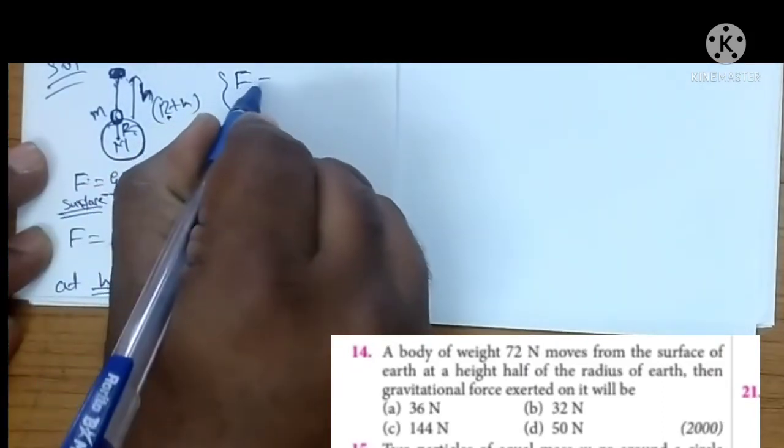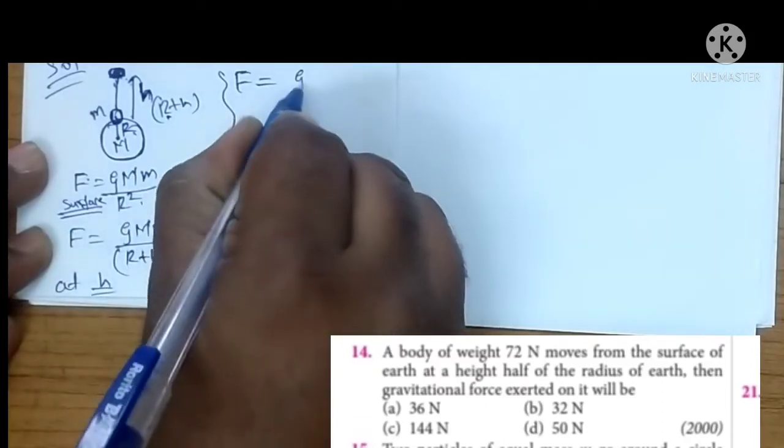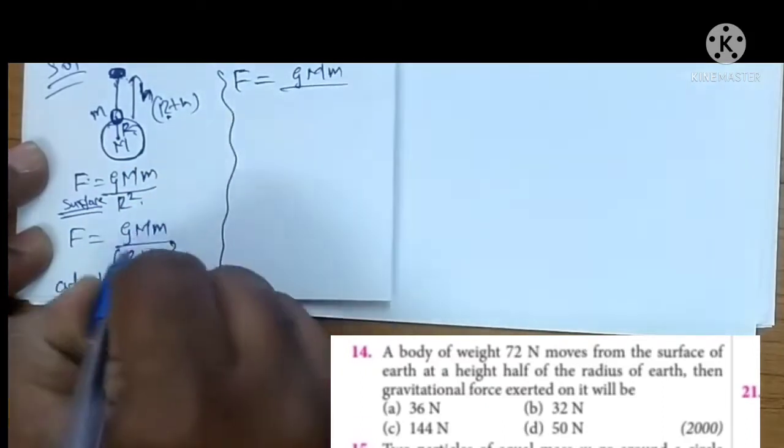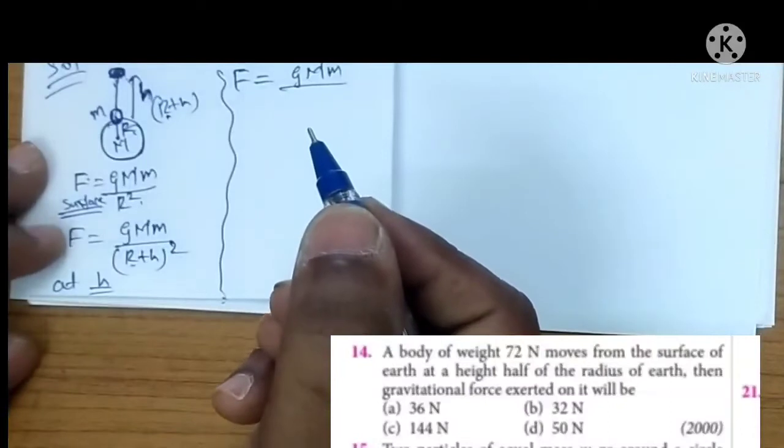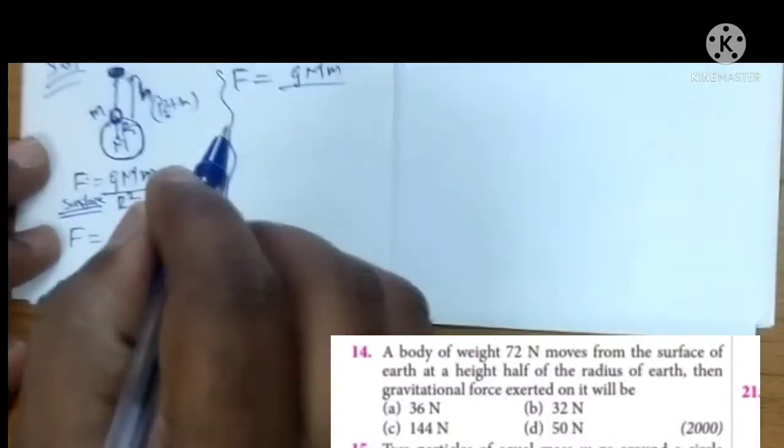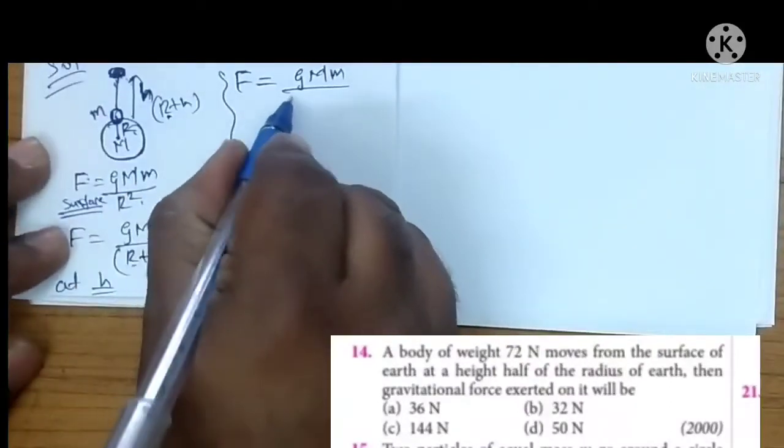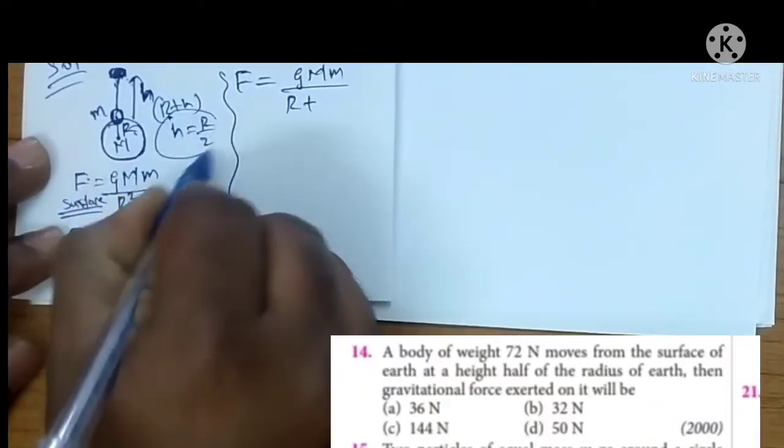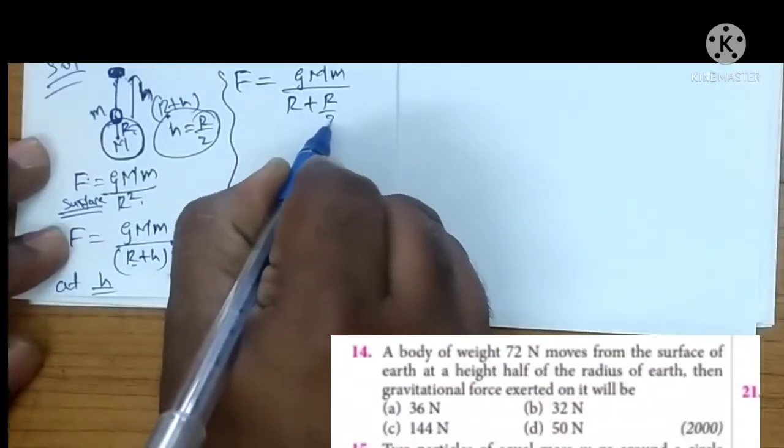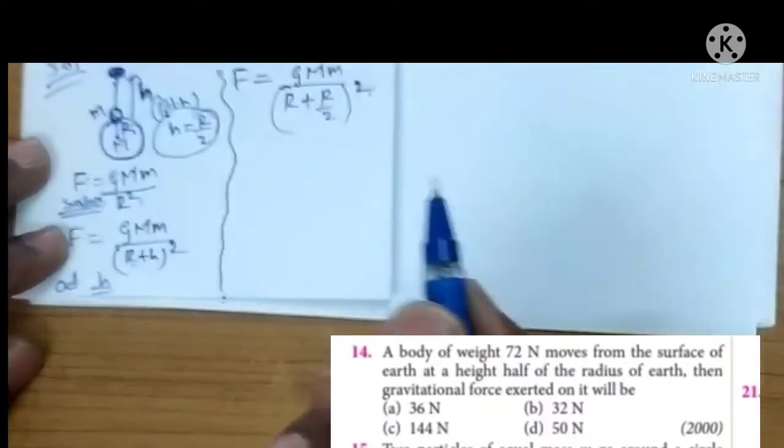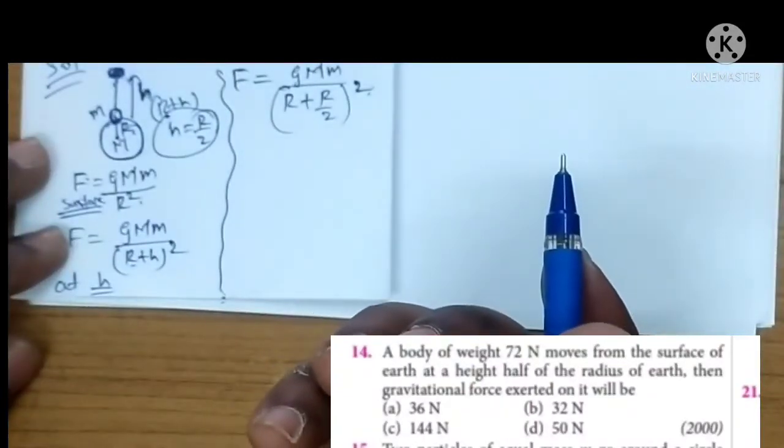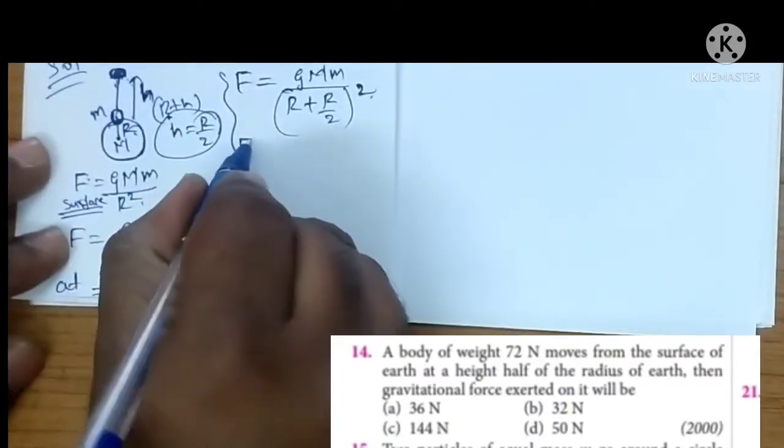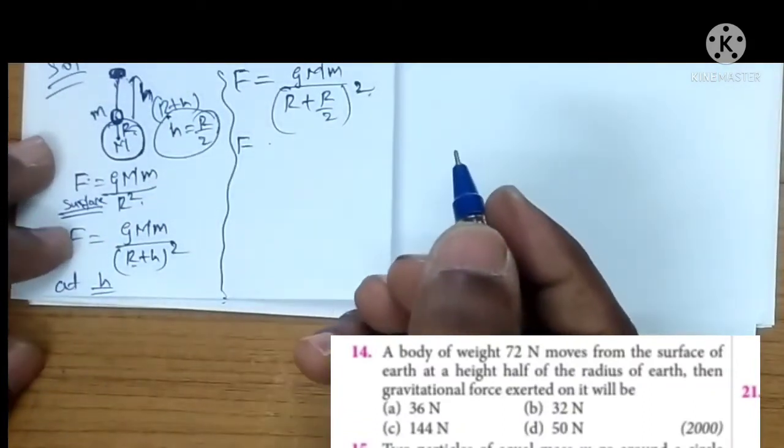F is equal to G M m upon r plus h square है. r plus h, h दिया है question में. कितना दिया है? Half of the radius दिया है. So I am going to write r/2. ठीक है? Question में दिया है. बाद में इसको solve करो.